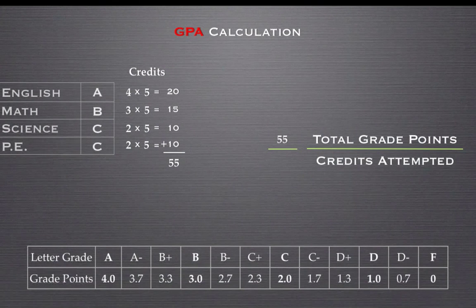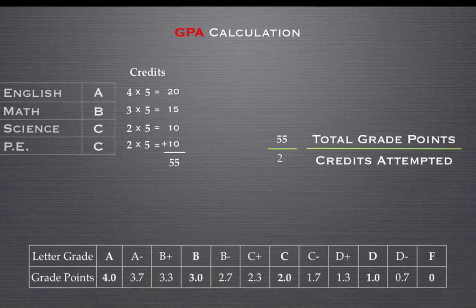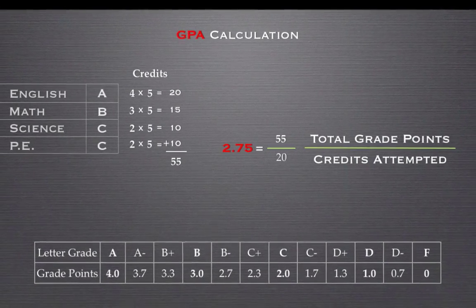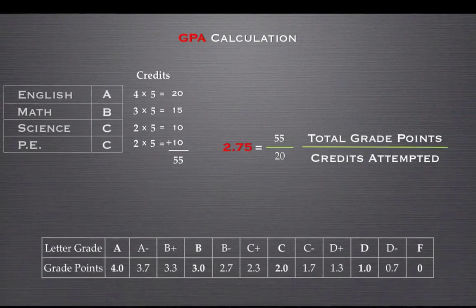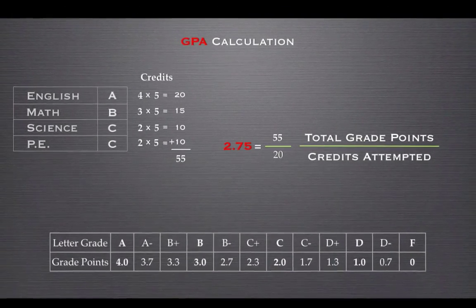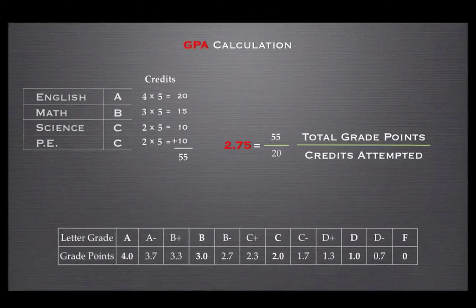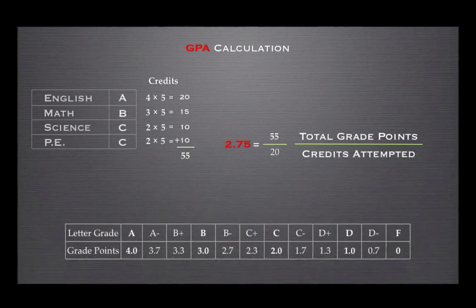In this case, there are four classes, five credits each, so we divide by 20. Our GPA for these four courses is 2.75.